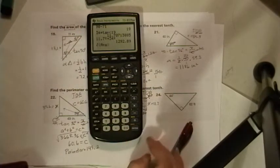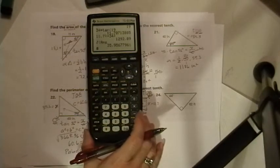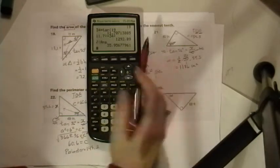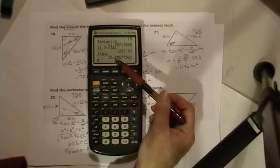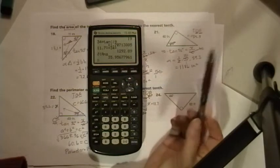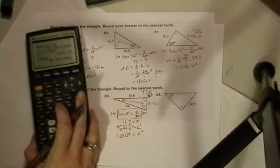35.95. Now, the 5 is going to make the 9 change to a 10, which is going to kick over the 5 to a 6. So, you get 36 for your other side. Now, it's asking for the perimeter.